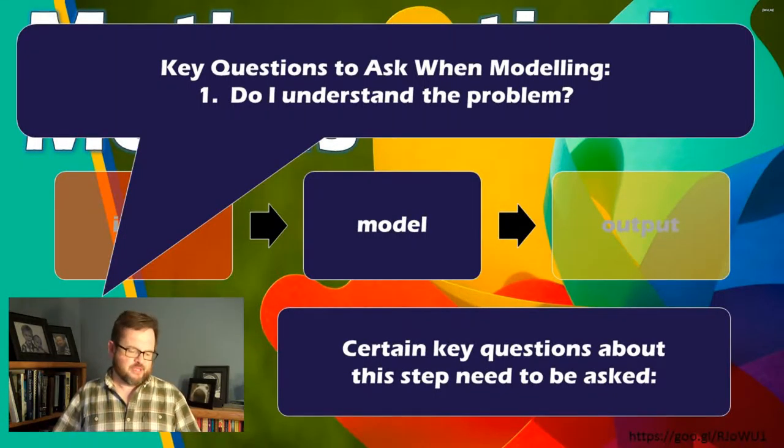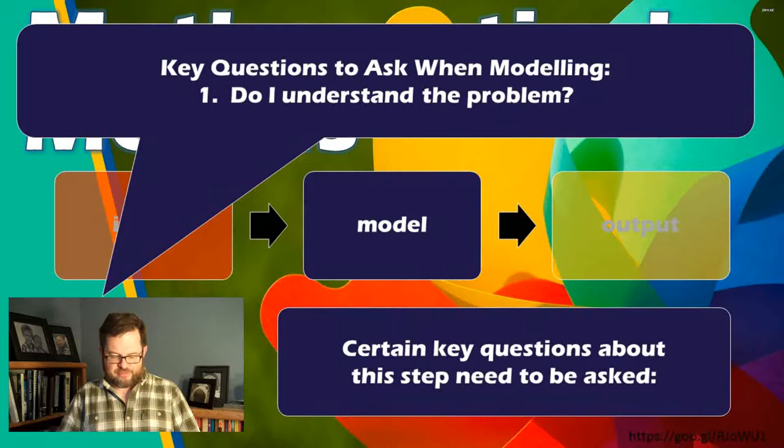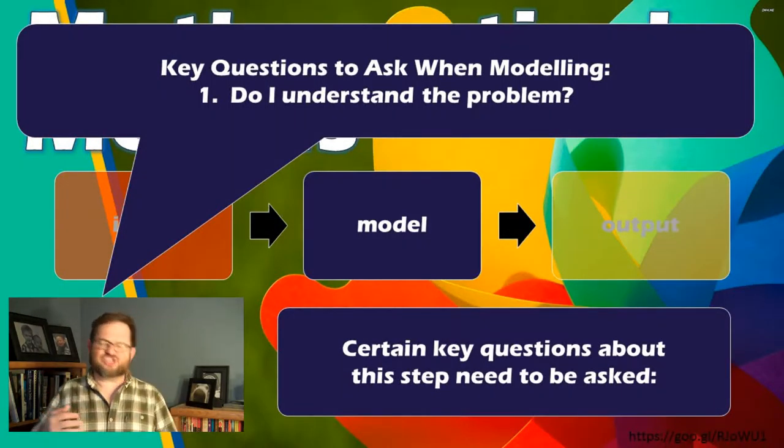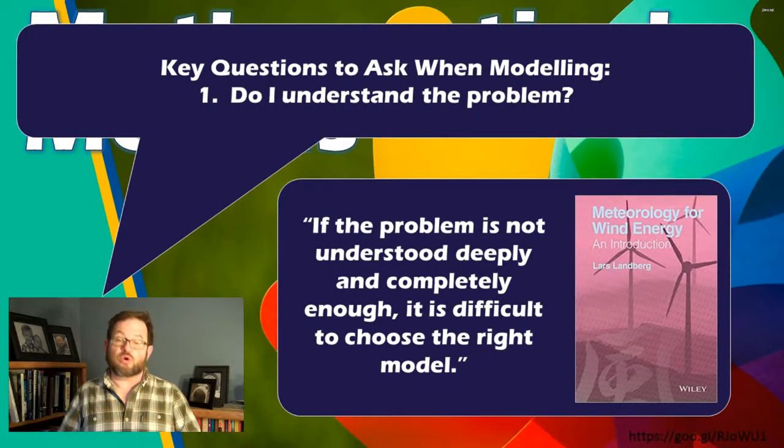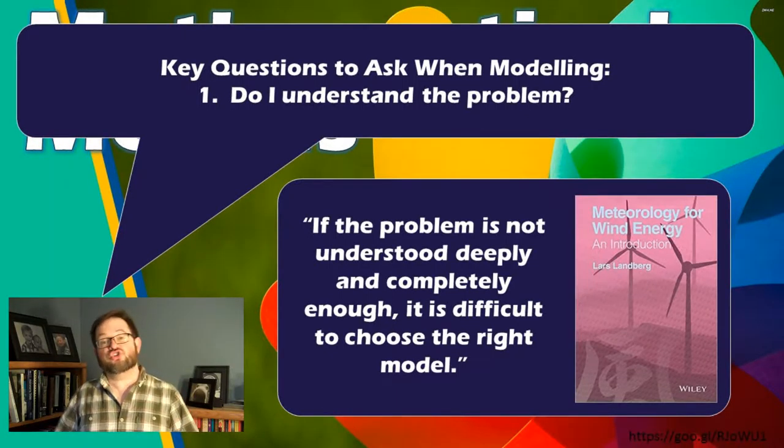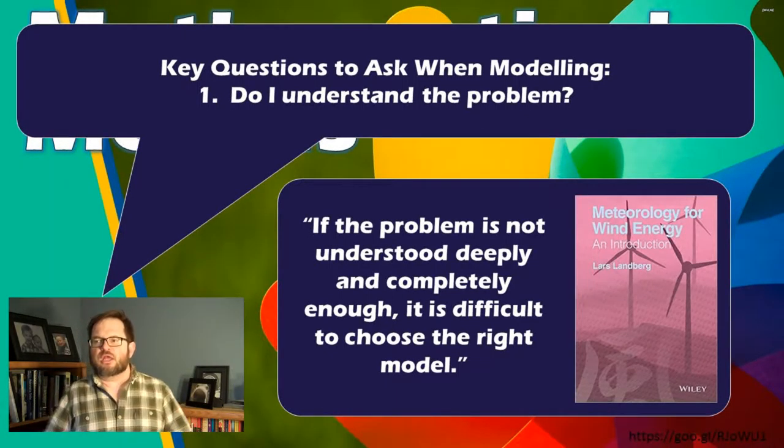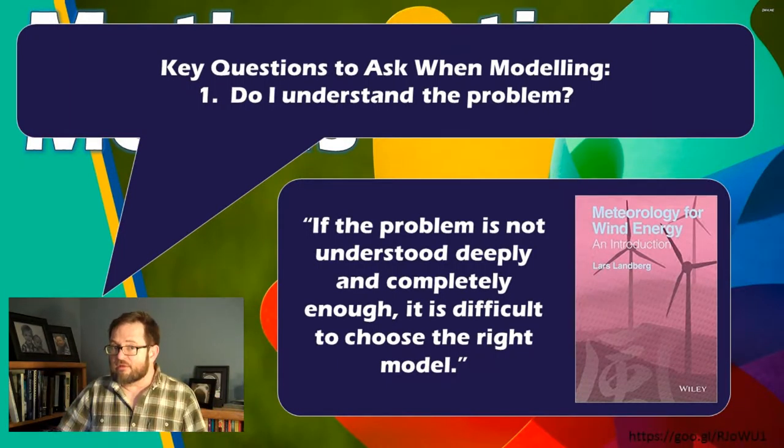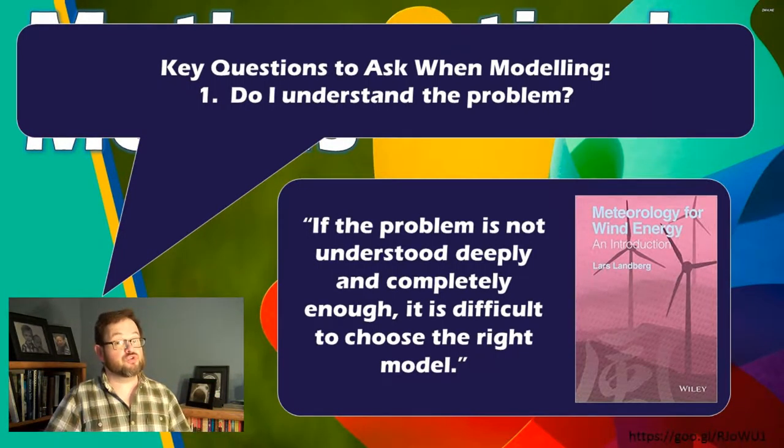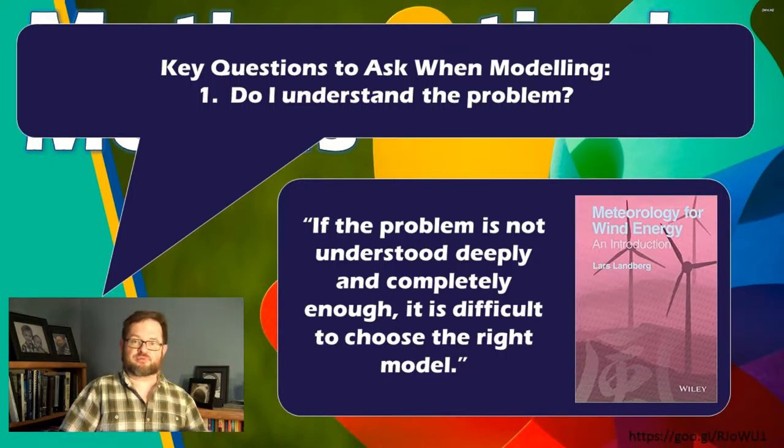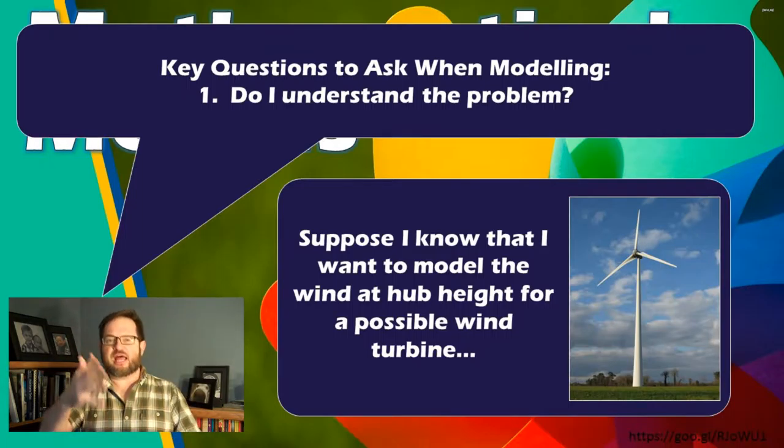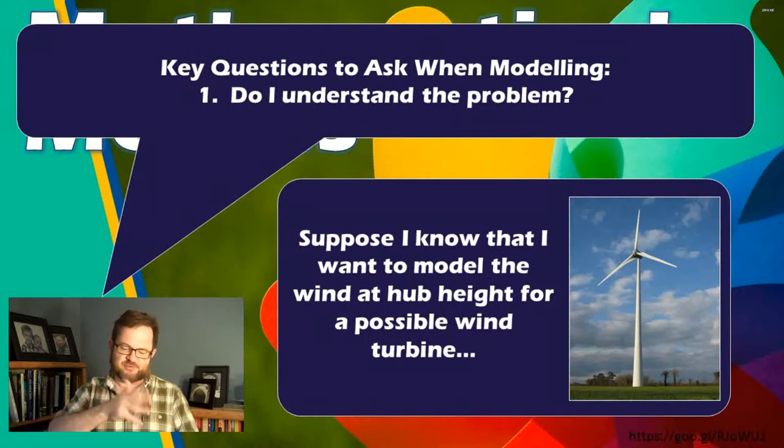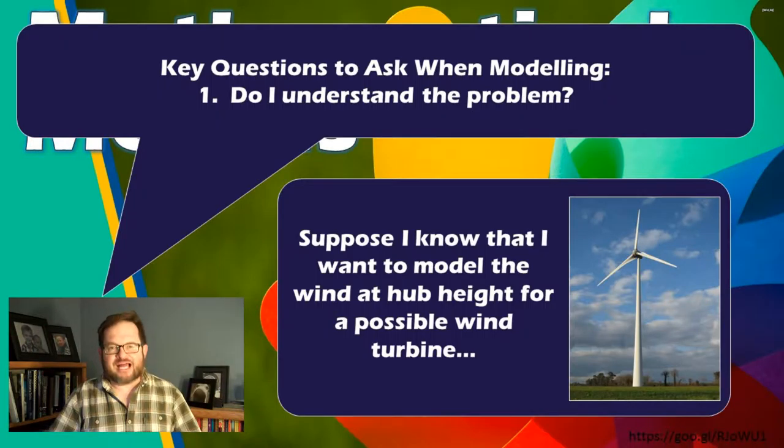The first question you want to ask yourself is, do I understand the problem I'm trying to solve? Your textbook actually throws out some verbiage here that's a little bit helpful here. If the problem is not understood deeply or completely enough, it will be difficult to choose the right model. So, you need to understand the problem extremely well before you can choose the tool that's going to solve the problem. So, just as an example in the context of wind power, let's say you wanted to model the height of the wind at the hub height of a possible wind turbine. Sounds like a perfectly logical thing to want to do. And the truth of the matter is, talking to colleagues, looking up in journal articles, going online, you're going to find out that there's lots of different models to do this. How are you going to know what you're going to need?